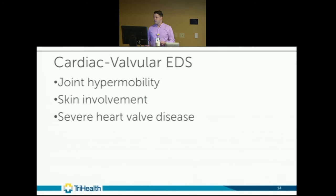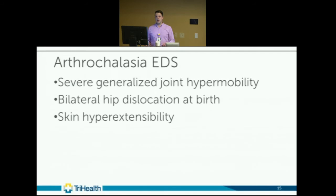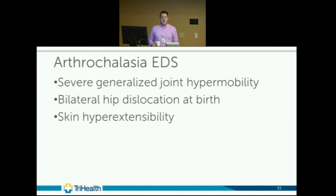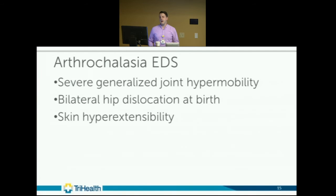Arthrocalasia EDS features severe generalized joint hypermobility, bilateral hip dislocations at birth, skin hyperextensibility, and frequent subluxations and dislocations of both small and large joints. I recently had a patient who had bilateral hip dislocations at birth and I'm sending her for genetic testing for possible arthrocalasia EDS.